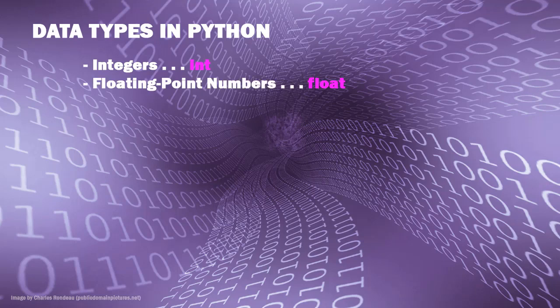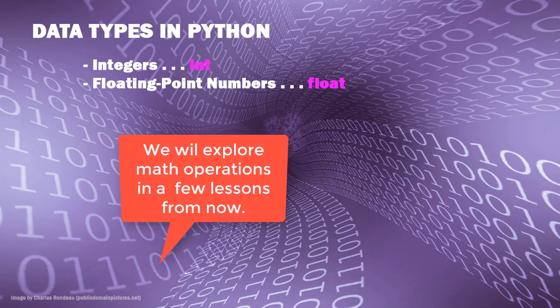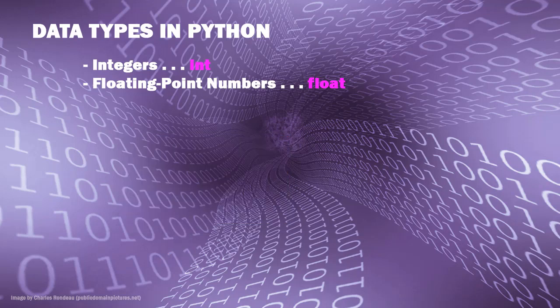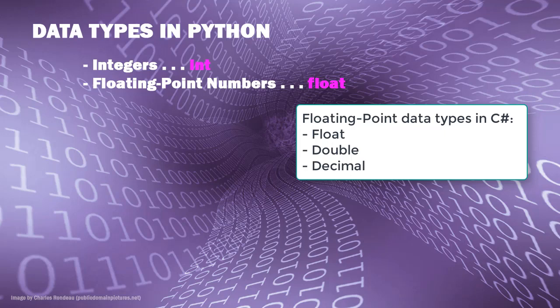Numbers that hold a decimal are referred to as floating point numbers, and the keyword in Python is float. Floating point numbers can be both positive and negative and have a decimal point. When dividing two numbers, there is integer division and regular division. Integer division gives a result that is an integer where the decimal is truncated — dividing 7 by 3 as integer division gives us 2, while dividing 7 by 3 as floating point gives 2.3333. In other languages like Java and C# you might have things like double, float, single, or decimal.